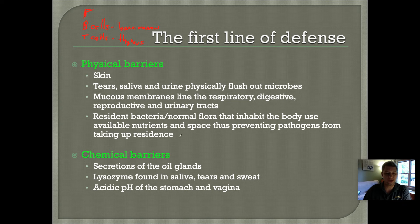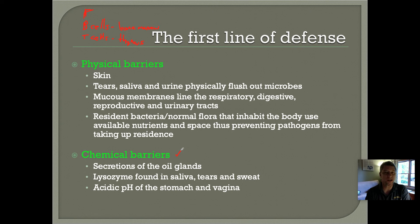There are also chemical barriers included in the first line of defense. These include secretions of the oil glands, sweat, tears, and saliva, as well as the acidic pH in your stomach and in the vagina in females, which will kill any invading microbes. For example, your food is covered with bacteria, but the low pH in your stomach will digest and kill them before they get into the rest of your body. The acidic environment of the vagina also prevents many infections of the female reproductive tract.